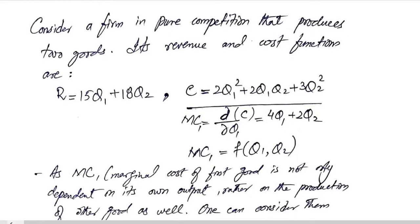We are considering a firm which is in pure competition and it produces two goods. Its revenue and cost functions are given. This is the revenue function based upon the first good and the second good that it produces, and then we have the cost function that also depends upon Q1 and Q2, the two goods that are technically related.